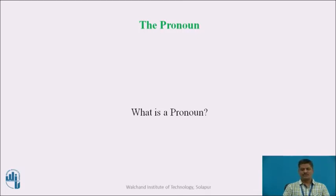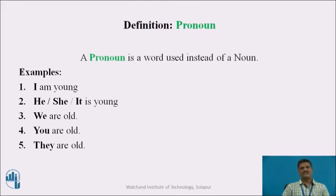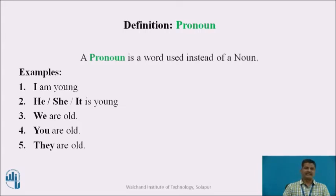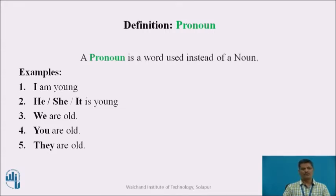Welcome back. Here is the answer — this is the definition for pronoun. A pronoun is a word used instead of a noun. The following examples will illustrate this definition. The first sentence: I am young. Here, 'I' is used as a personal pronoun, and it is used in place of a noun, which might be the name of a person. So 'I' is a pronoun used in place of a noun.